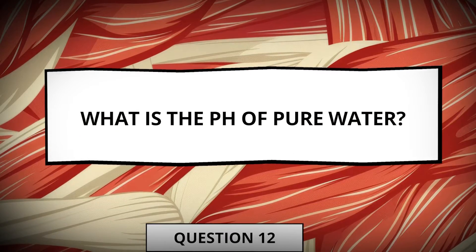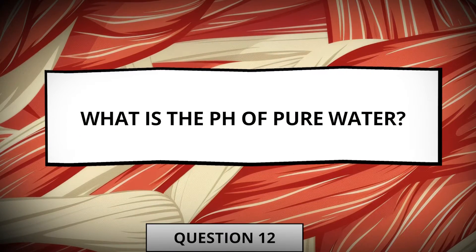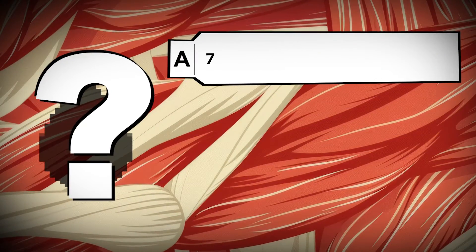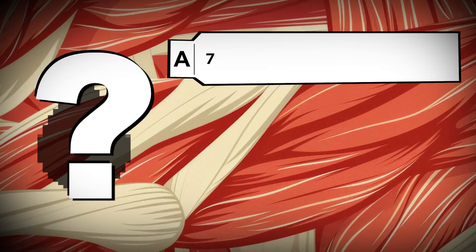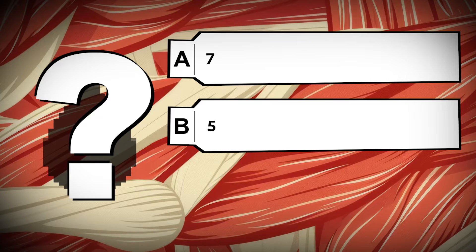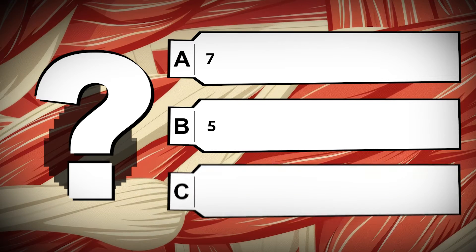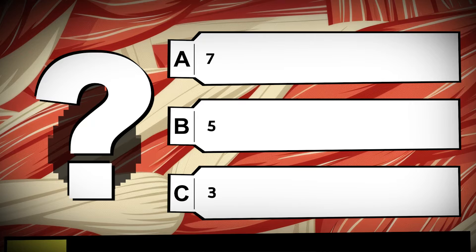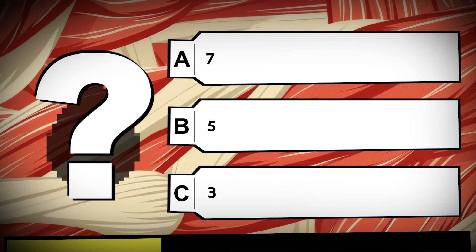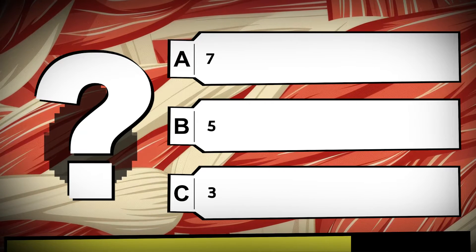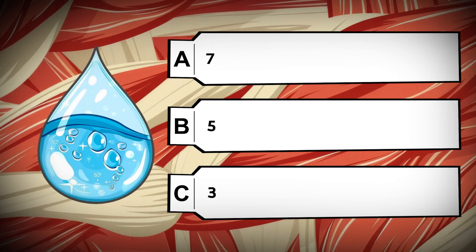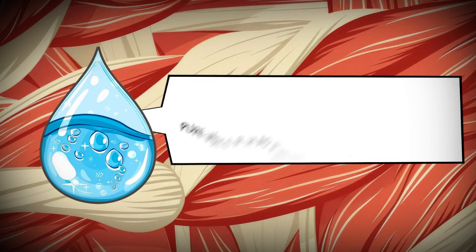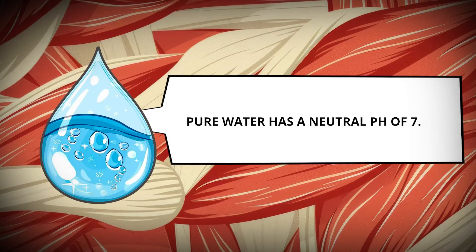What is the pH of pure water? 7. 5. 3. Pure water has a neutral pH of 7.